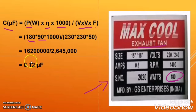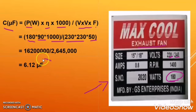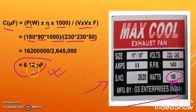So I put efficiency as 90, 1000 is a constant, divided by the single phase voltage. The voltage is given as 220 or 240, so I took the value in between, which is 230, and the frequency in India is 50 Hz. When I calculate, I get a value of 6.12 microfarad. So for this 180-watt induction motor, we need a capacitor of 6.12 microfarad.